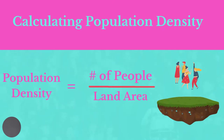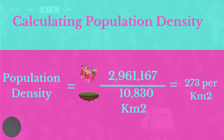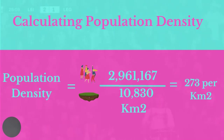We can calculate population density by dividing the total population of a country or an area by the size of the land of that area. For example, if the population is 2,961,167 and the land area is 10,830 square kilometers, we can calculate the population density by dividing the population by the land size, which gives us 273 persons per kilometer square.